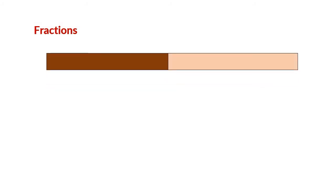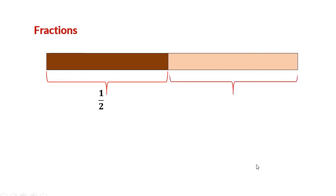Now look at this strip. It is divided into two equal parts. The first part is equal to 1 out of 2, so we can write it as 1 by 2 or half. The second part is also 1 out of 2 parts, so we can also write it as 1 by 2 or half.